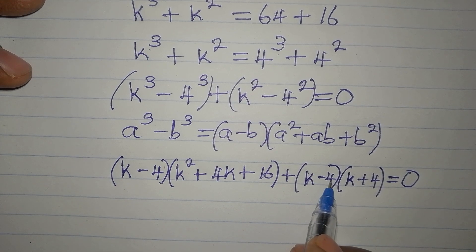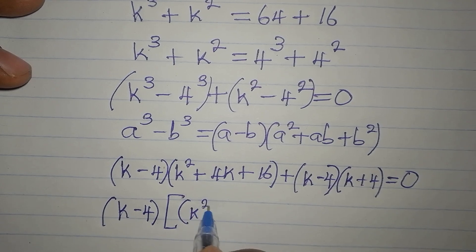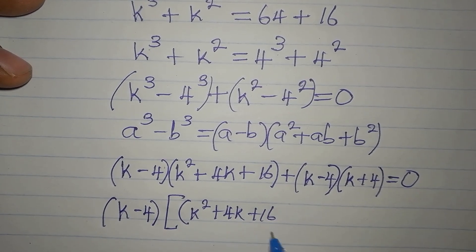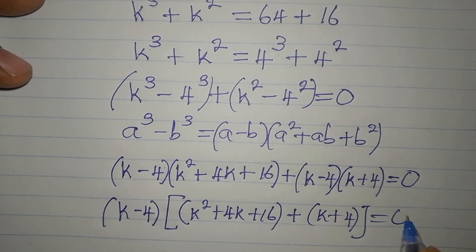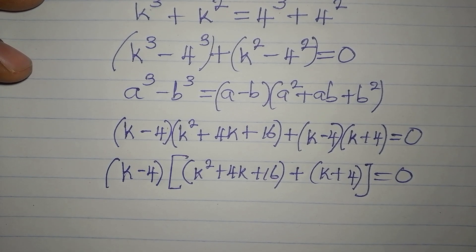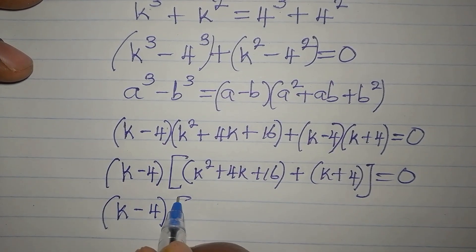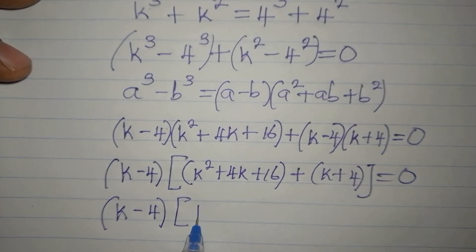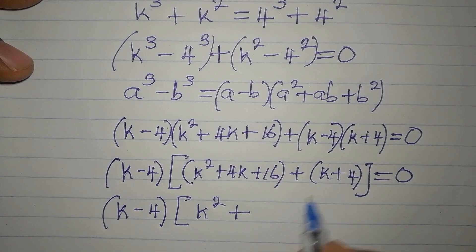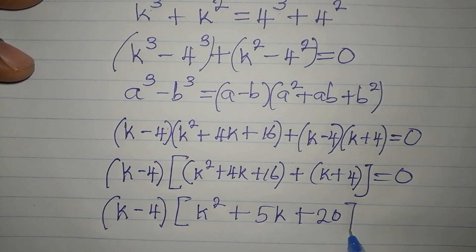Now (k − 4) is a common factor, so it comes out. Inside the bracket we have the leftover terms: k² + 4k + 16 from the cubes part, plus k + 4 from the squares part. Adding those terms inside the bracket gives us k² + 5k + 20. So we have (k − 4)(k² + 5k + 20) = 0.